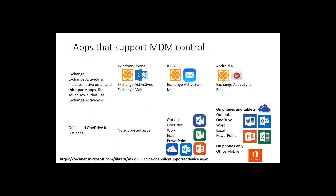Many applications now support mobile device management. When MDM is turned on, a device receives an email prompting enrollment. Once enrolled and approved, policies are pushed down and corporate email flows. You can also manage Word, Excel, PowerPoint, and OneDrive for Business and set policies — for example, preventing a user from copying and pasting a corporate spreadsheet into a personal email and sending it to a third party. Intune provides this granular level of control over corporate data on devices.